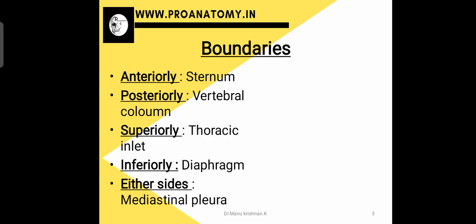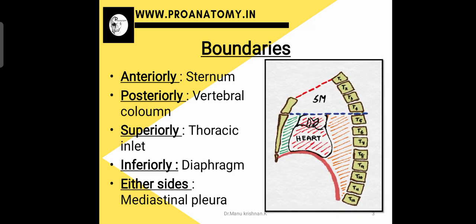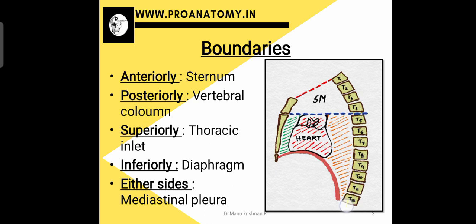Let's discuss the boundaries of mediastinum. Here we have taken a sagittal section through the thoracic cavity. This is the sternum which has a manubrial part, body and the xiphoid process. Then we have the vertebral column, T1 to T12 vertebrae. The mediastinum is bounded anteriorly by the sternum and posteriorly by the vertebral column, particularly the thoracic vertebrae T1 to T12.